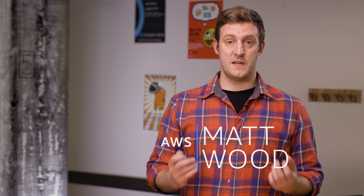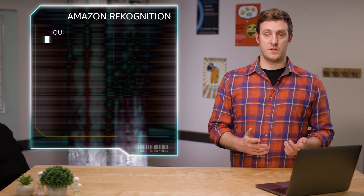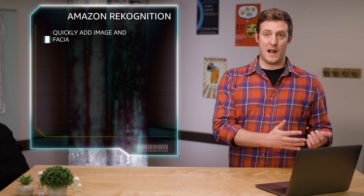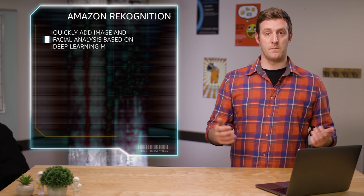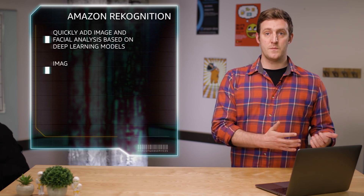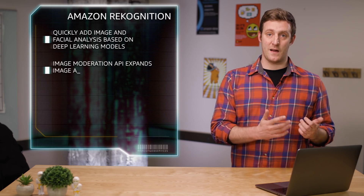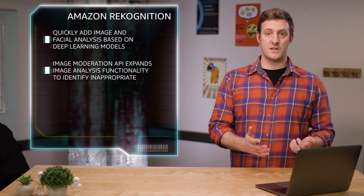Greetings, my name is Matt Wood and I'm here at the AWS headquarters in Seattle to give you an update on Amazon Rekognition. Rekognition is a service that allows your application to quickly add sophisticated image analysis and facial analysis based on deep learning models. The new image moderation API expands our image analysis functionality to help you identify images that would be inappropriate for your application.